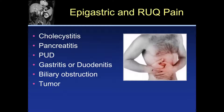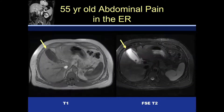Let's begin in the upper abdomen — epigastric and right upper quadrant. The potential causes of pain in this anatomic area include cholecystitis, pancreatitis, peptic ulcer disease, gastritis or duodenitis, biliary obstruction, and always — always remember tumor. Tumor should always be in your differential for patients presenting with pain.